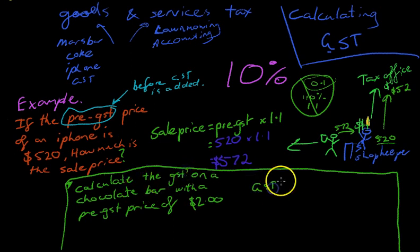Now, GST is equal to the pre-GST price times, not 1.1 like it was up here, but only times 0.1. Because we're just trying to find 10% of whatever the pre-GST price was.